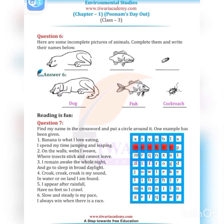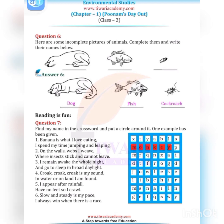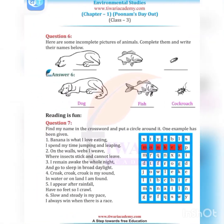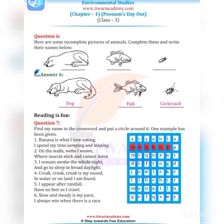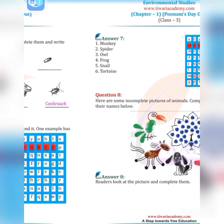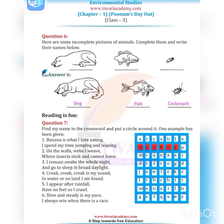Reading is fun — Question seven: Find my name in the crossword and put a circle around it. One example has been given. First riddle: banana is what I love eating, and I spend my time jumping and leaping — the answer is monkey. Second riddle: on the walls, webs I weave — the answer is spider.